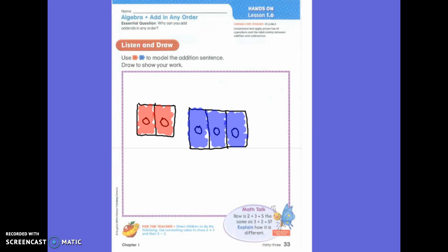So below your cube, I want you to write the number sentence: 2 plus 3 equals. Please do not write the sum yet. I know we've already talked about this sum, but I don't want you to write the sum just yet.